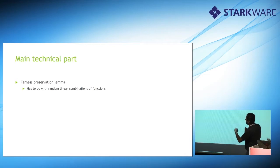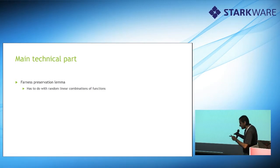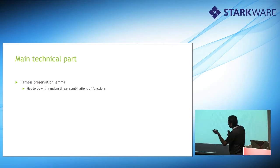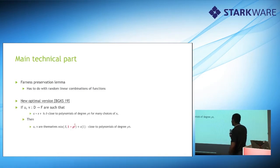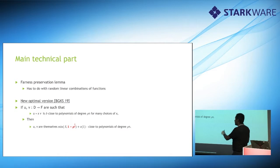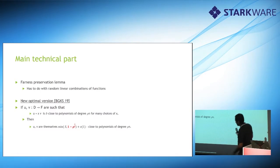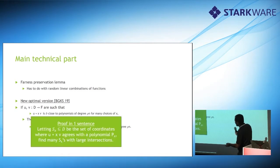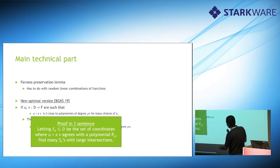The main technical ingredient in the analysis is a statement about random linear combinations of functions — since the core of the degree-respecting projection is taking two functions and a random linear combination. The statement is: if u + x·v is delta-close to polynomials of low degree for many choices of x, then u and v themselves are pretty close to polynomials of low degree. This is a very general statement. The proof is in one sentence, but it's a long sentence.